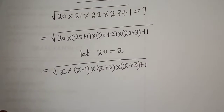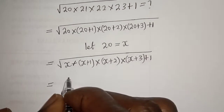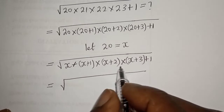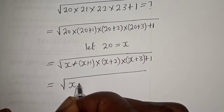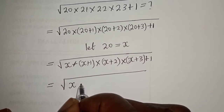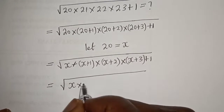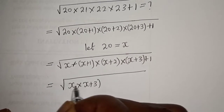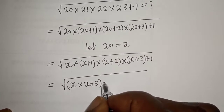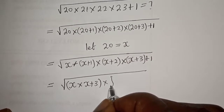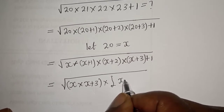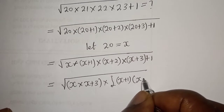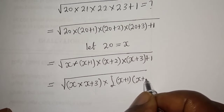Now let's rearrange this. We group it as the square root of S multiplied by S plus 3, then multiplied by S plus 1, multiplied by S plus 2, plus 1.